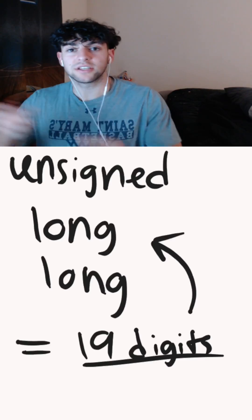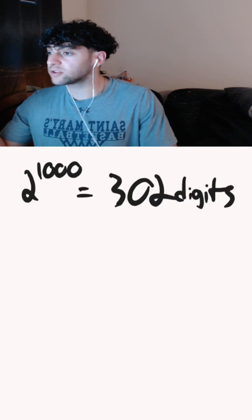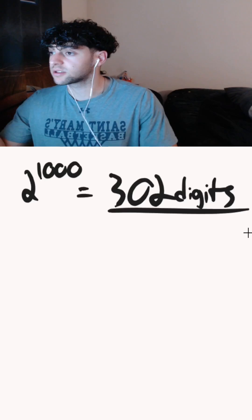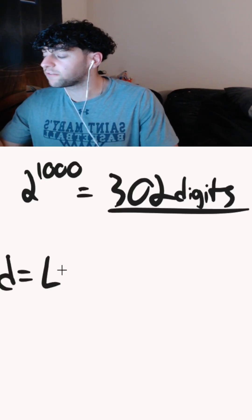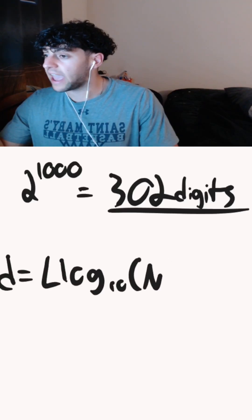2^1000 is much larger than this. Specifically, it has 302 digits. We can find this using the formula: digits = floor(log₁₀(N)) + 1.